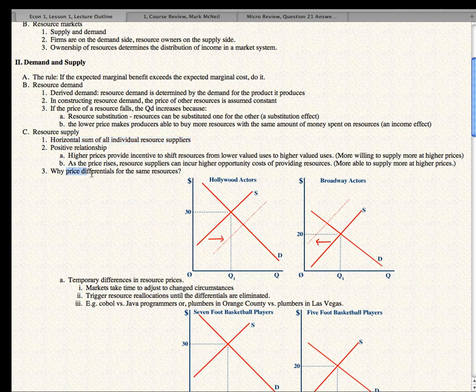Now, sometimes there are price differentials for the same resources. Do they last? No. Most of them are temporary differences. So, for instance, if Hollywood actors are making $30,000 a month and Broadway actors are only making $20,000 a month, then what will tend to happen is Broadway actors will leave Broadway in New York. And when that happens, the supply of Broadway actors shifts to the left and the price of Broadway actors goes up. These actors then travel to Hollywood and they offer their services for sale in Hollywood. The supply curve of actors goes up in Hollywood and the price goes down. And the prices tend to equalize them. Those are temporary differences in resource prices.